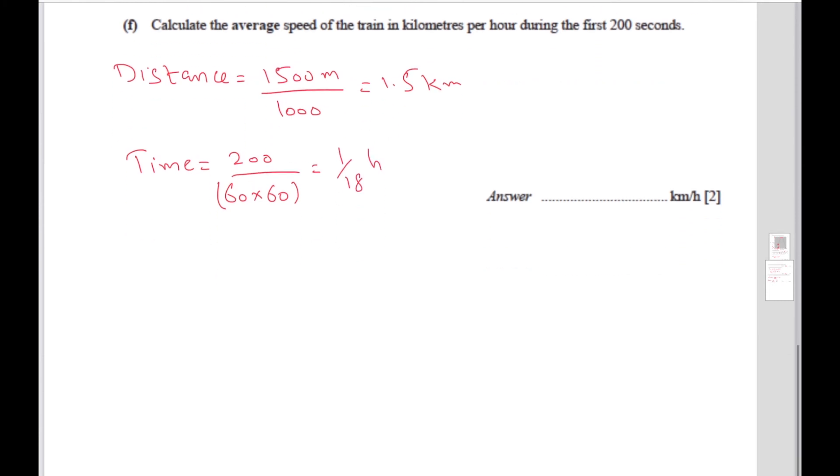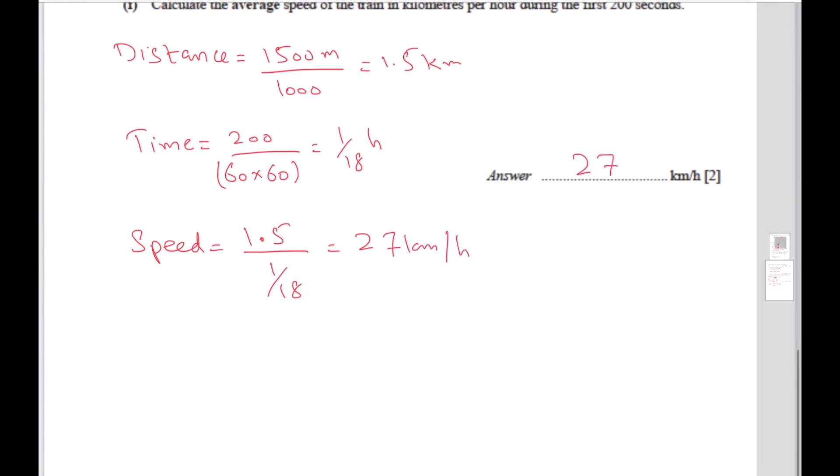So the speed can be calculated by dividing 1.5 by 1 over 18. Let's plug this into the calculator. Divide this by 1, 1 over 18. So the speed comes out to be 27 kilometers per hour. You write your answer over here, 27 kilometers per hour, and we're done.